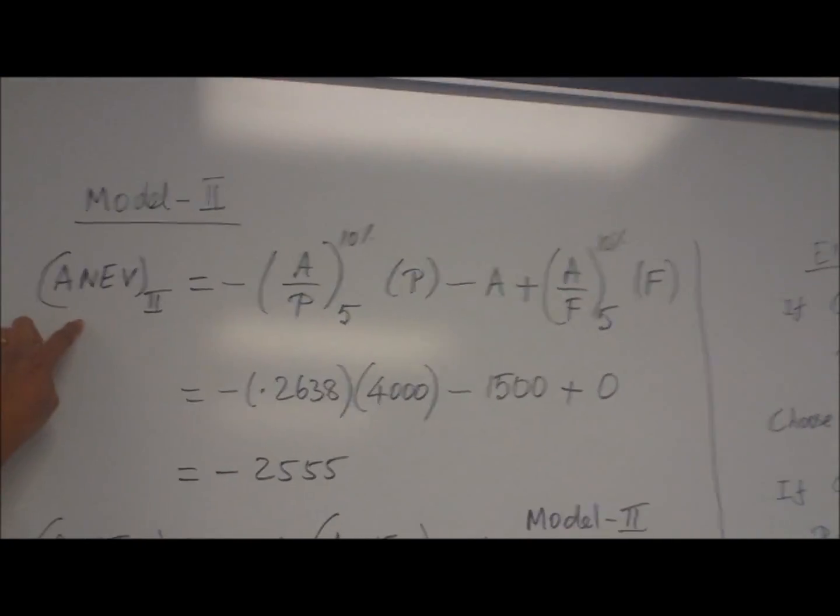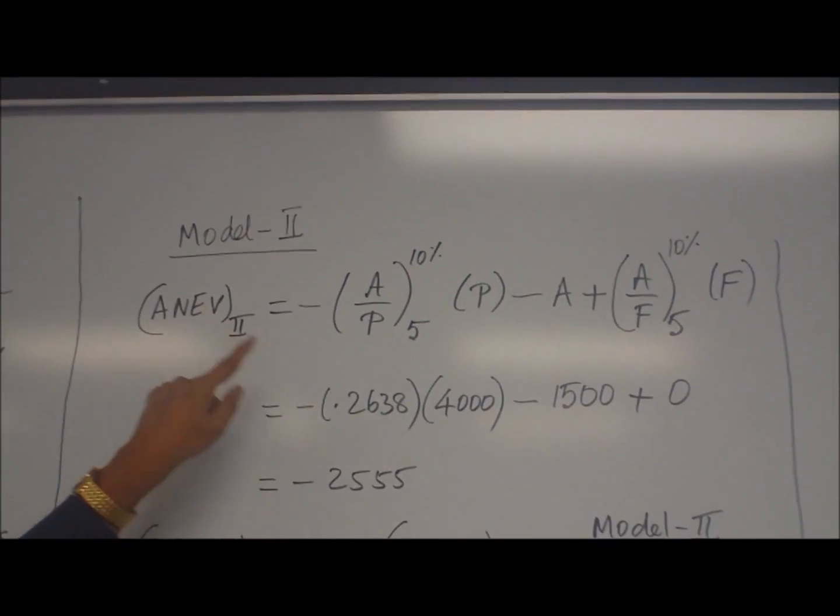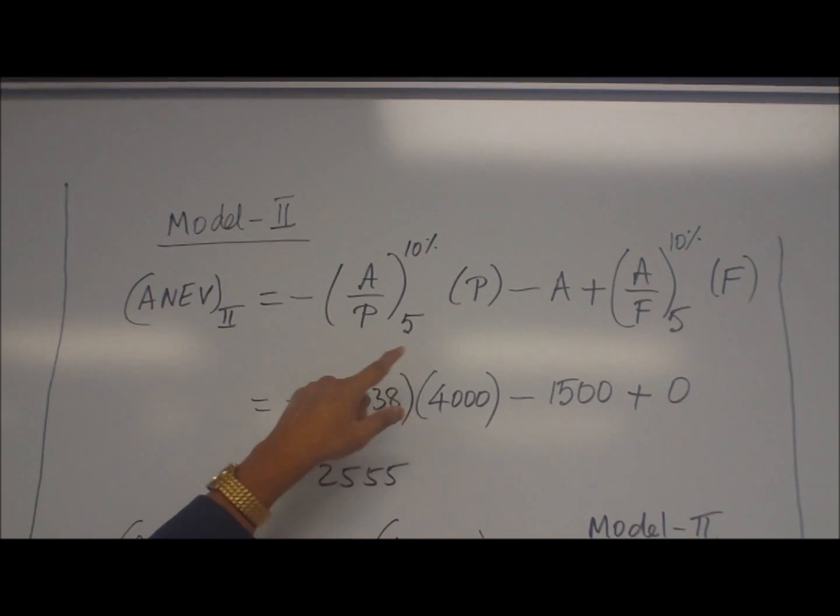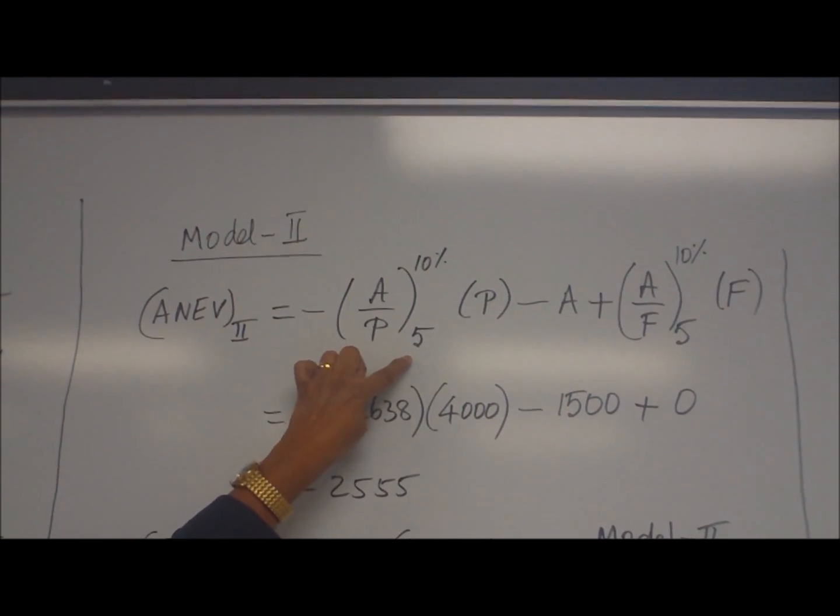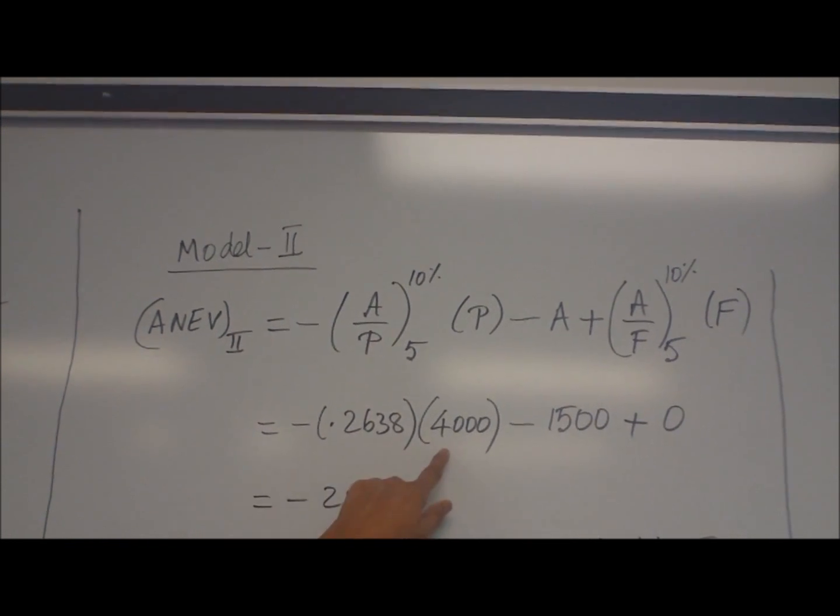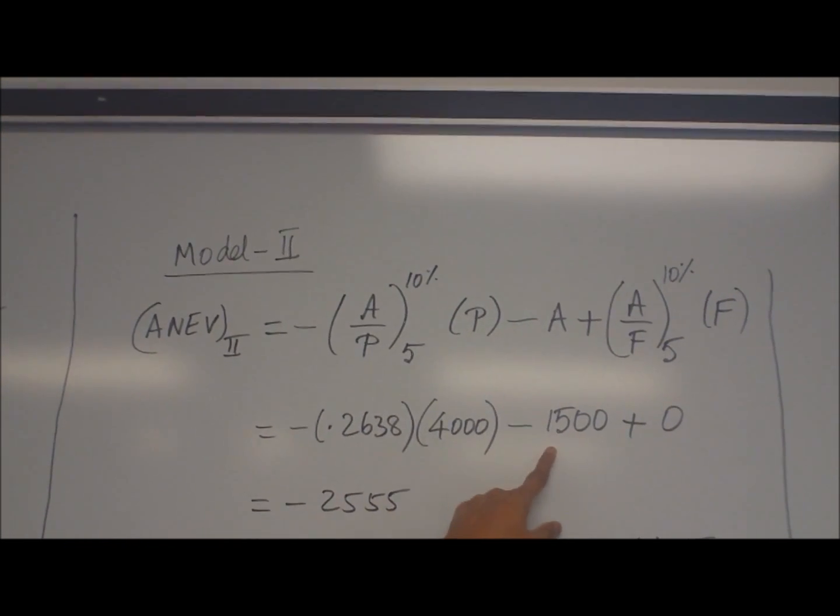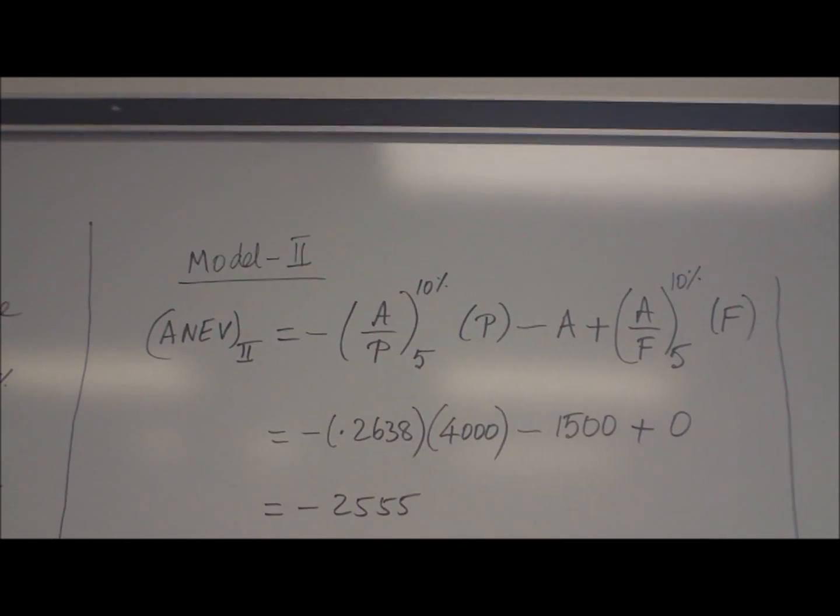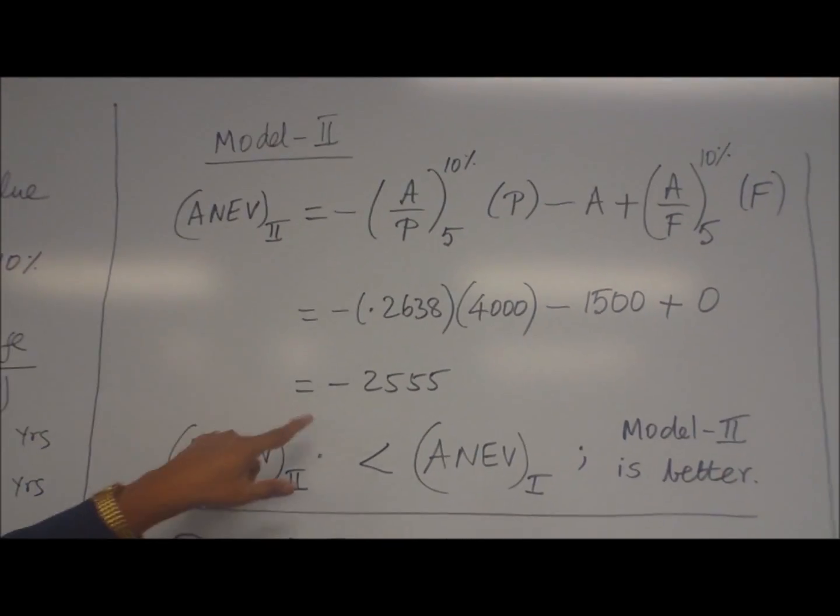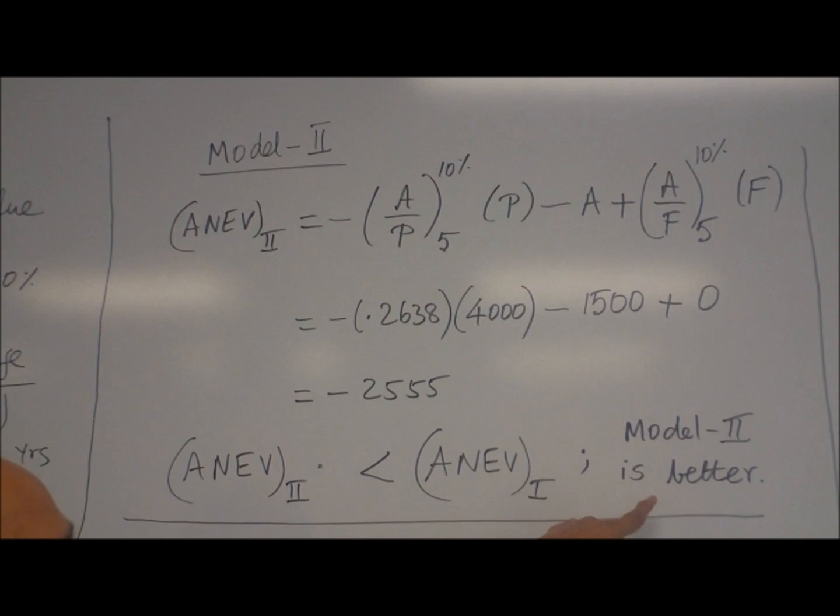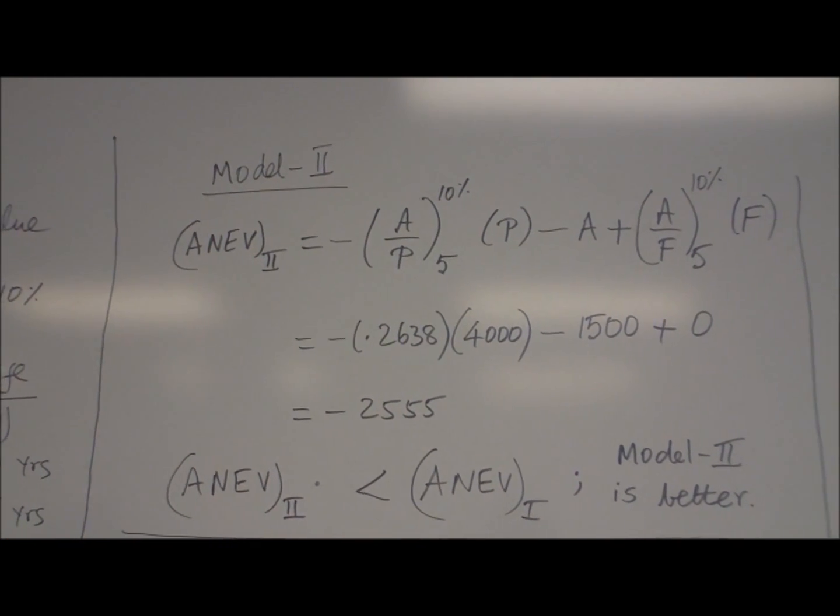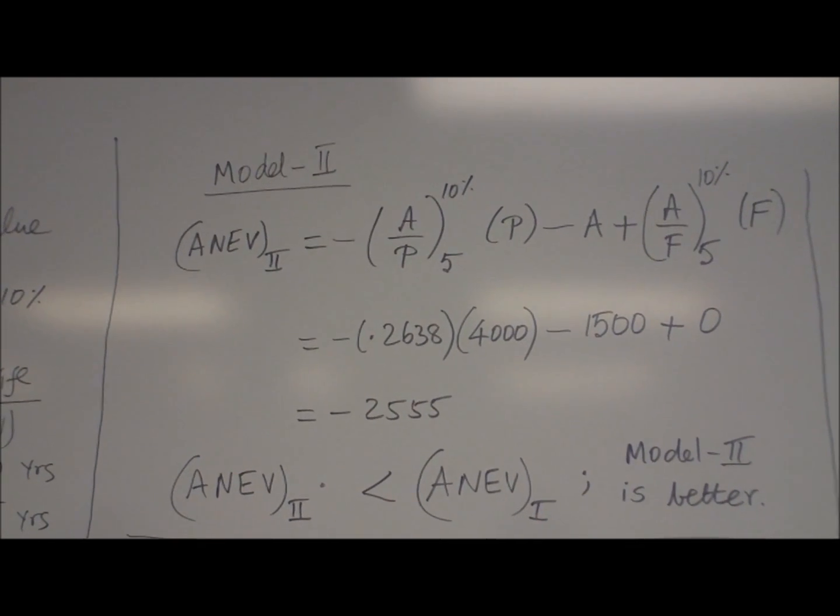Similarly for Model 2, you can calculate ANEV_2. But here the number of years is 5. The rest of it, the P value is different. You find A/P for N equals 5 on the same table, I equals 10%. Then the ratio times P is 4,000 for Model 2, and A is minus 15,000, F value is 0. You calculate minus $2,555. Now ANEV_2 is less than ANEV_1, that means Model 2 is better.